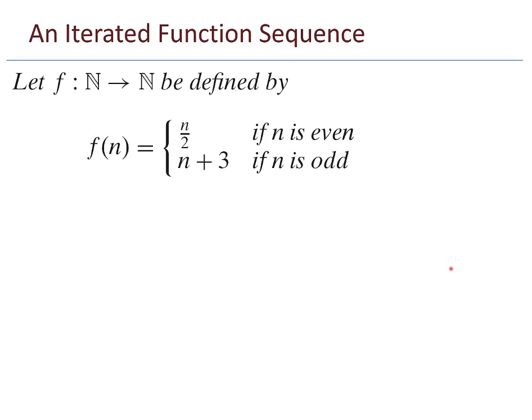Here's a mathematical example of an iterated function sequence. Let f be a function from the natural numbers to the natural numbers. If n is even, then f of n is n over 2. And if n is odd, then f of n is n plus 3. How about a quick example? Let's start off with 21. 21 is odd, so I add 3. 24 is even, so divide by 2. 12 is even, divide by 2. 6 is even, divide by 2. 3 is odd, so add 3. It looks like I've ended up in a loop that contains the two numbers, 6 and 3.